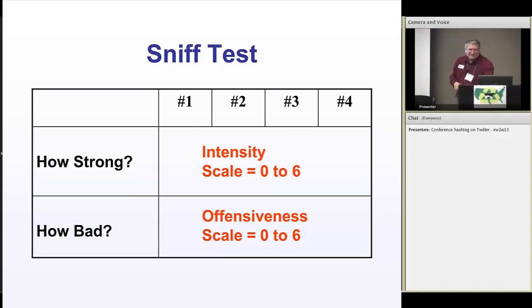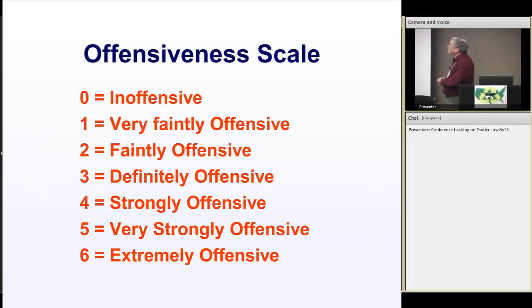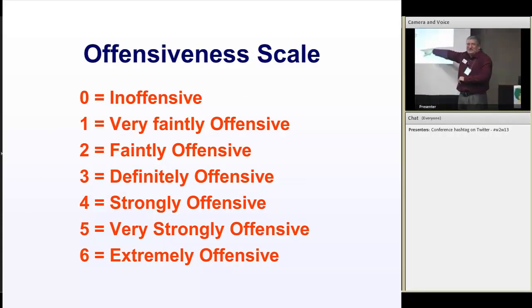We have a ballot, zero to six, the intensity scale, the exact same one you all used. They used the offensive scale that Misselbrook used. In other words, if it's a six, you know, knock the buzzard off the gut wagon. I can't imagine anything worse.